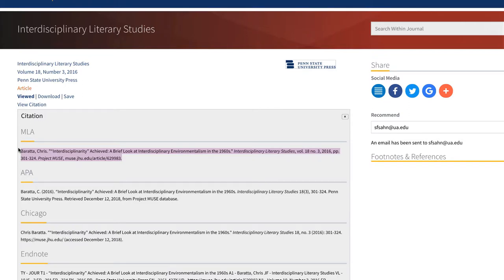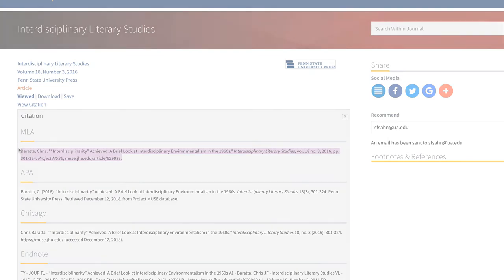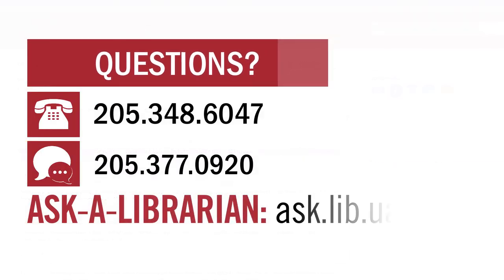That's it for now. Thanks for watching. For more information on searching in Project Muse, check out our videos Advanced Searching in Project Muse and Using the My Muse Library on our YouTube page. If you have any questions, you can call us at 205-348-6047, text us at 205-377-0920, or visit ask.lib.ua.edu to ask a librarian.